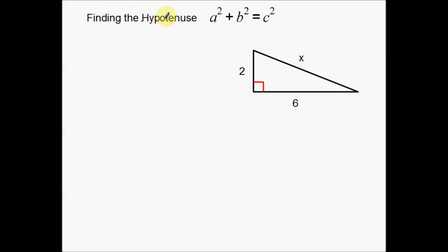The first example we're going to do is find the hypotenuse of a triangle. These are going to be some basic examples, but I'll also go over how to simplify some of the answers, especially on this first one. I also have the Pythagorean Theorem written up here.